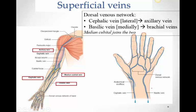Looking at the posterior or dorsum of the hand, the basilic vein travels all the way up medially and joins the brachial veins. The cephalic vein, on the lateral side, travels all the way up the forearm, crosses the cubital fossa, and travels along the lateral side of the arm. It lies in a groove between the deltoid and pectoralis major, then pierces the fascia to drain into the axillary vein.